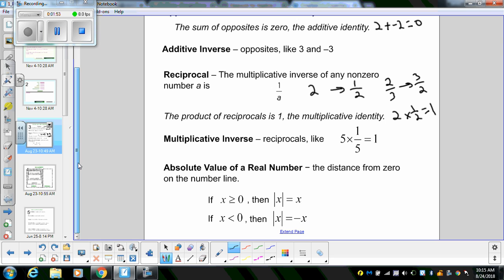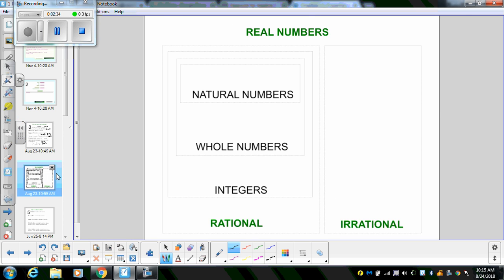Then you have absolute value of a real number, which basically just means the distance from 0 on the number line. So if x is greater than 0, then the absolute value of x equals x. And if x is less than 0, the absolute value of x equals negative x. So if I ask you what the absolute value of 2 is, it's going to equal 2. But if I ask you what the absolute value of negative 2 is, negative 2 is still 2 numbers away from 0, so the value will still be 2. If you need to fast forward or pause, you can do that throughout the video.